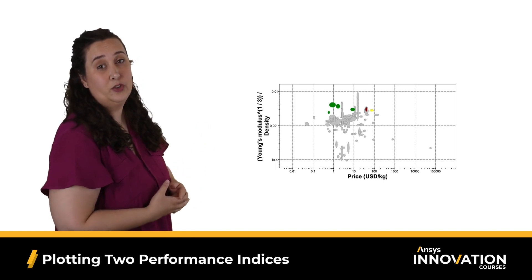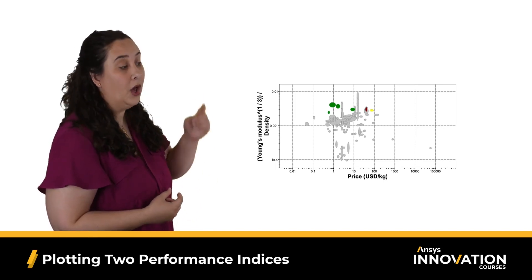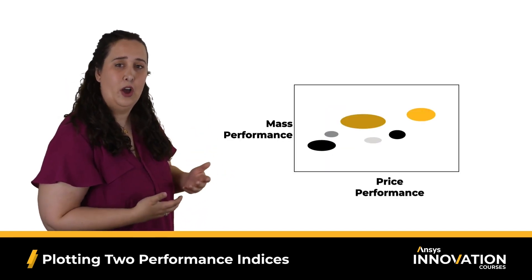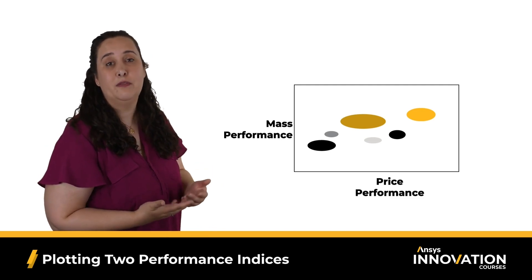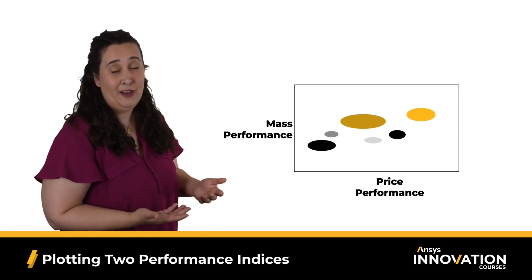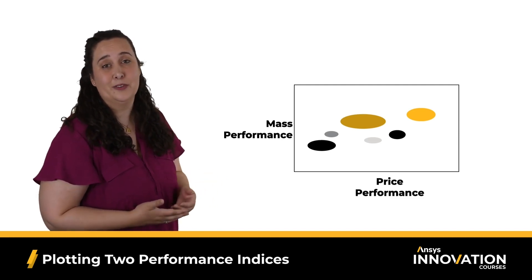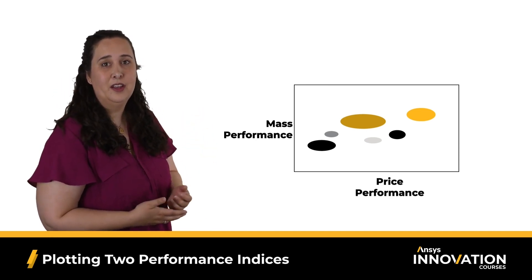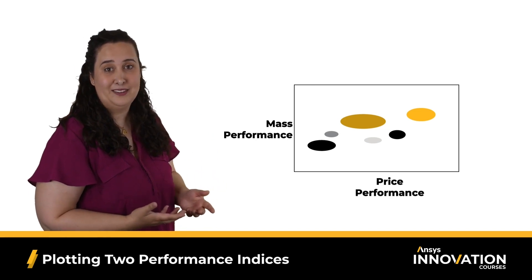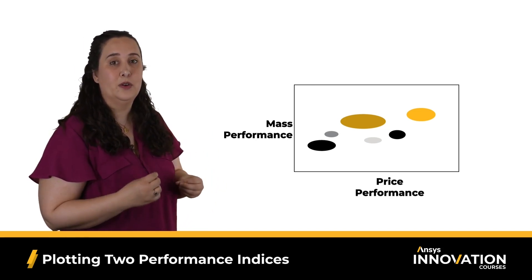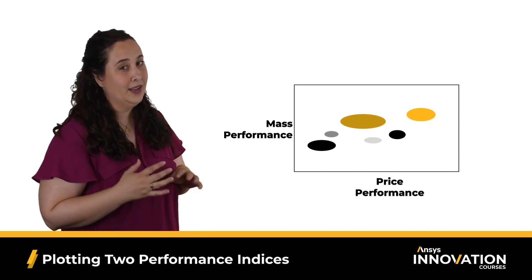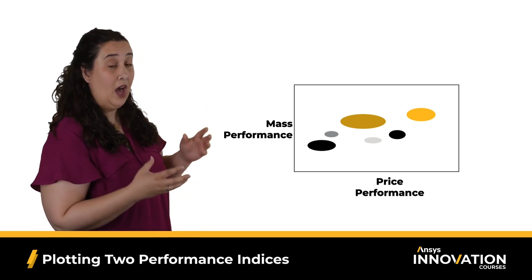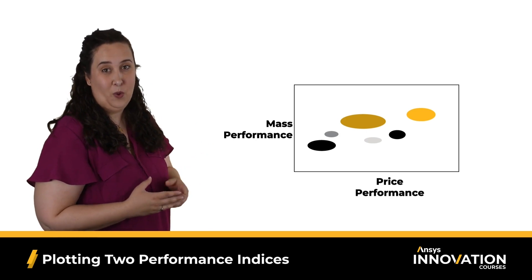We've discovered there's an inherent flaw with this chart — we need to be comparing performance indices on both axes. A chart looking at mass and cost performance is one of the most commonly used during advanced material selection with multiple objectives, as both criteria are often critical during design. The protocols are: performance indices on both axes, and those indices should minimize the objective — not maximize as in basic systematic material selection. That means optimal materials will be found in the lower left-hand corner of the chart.